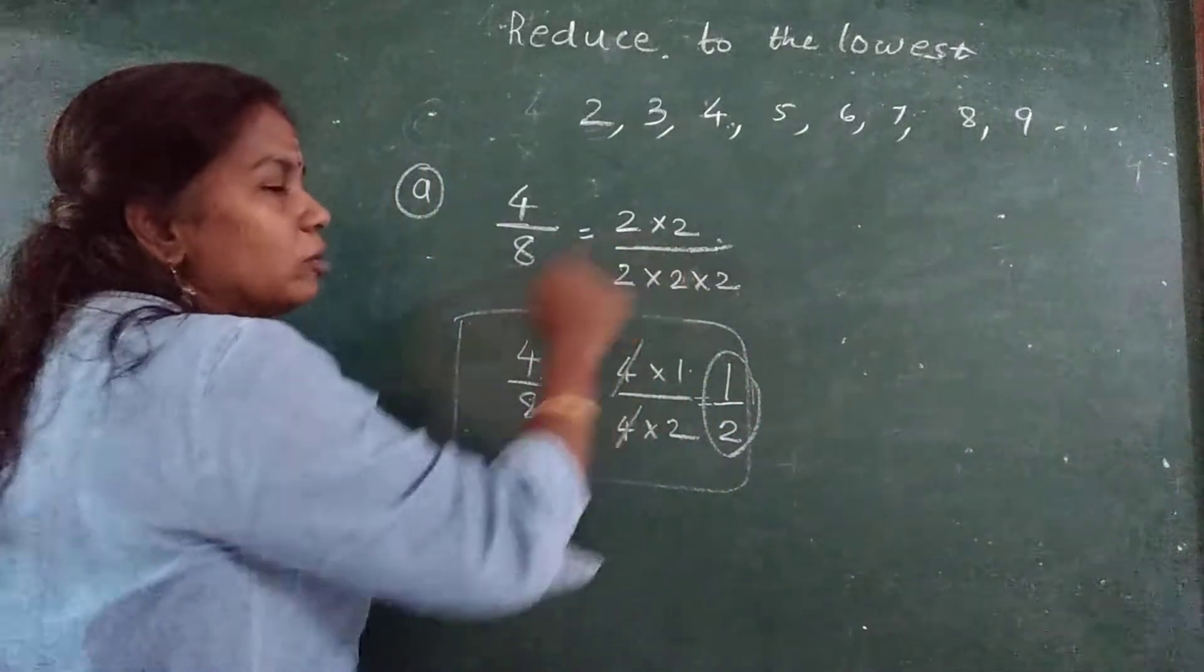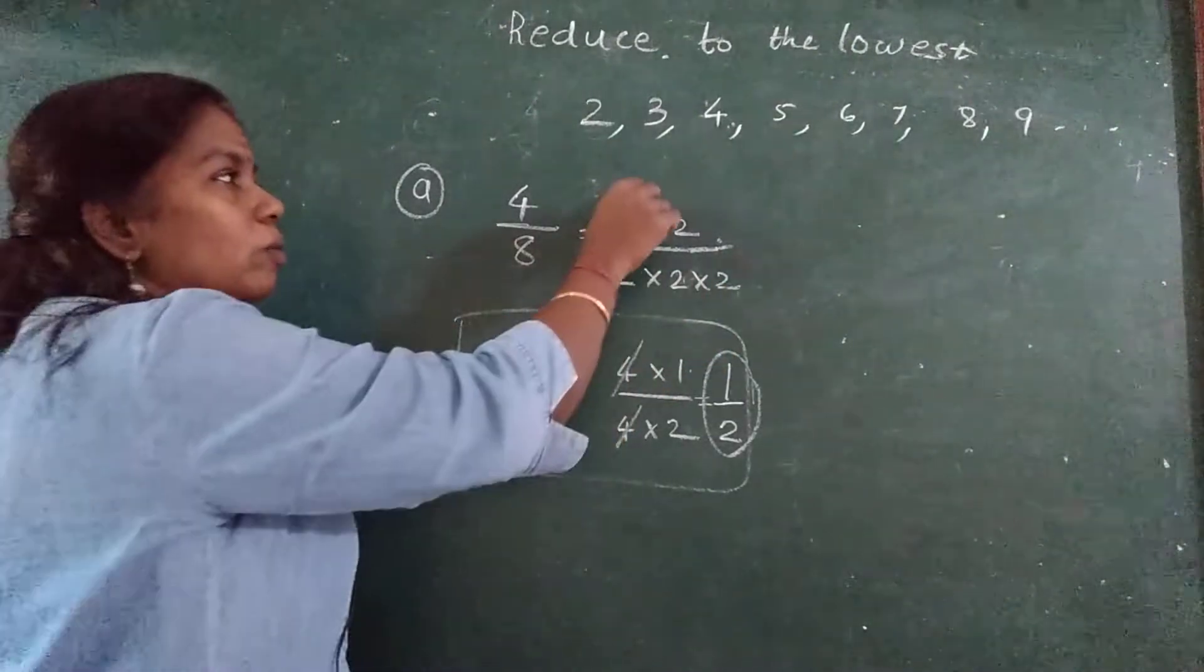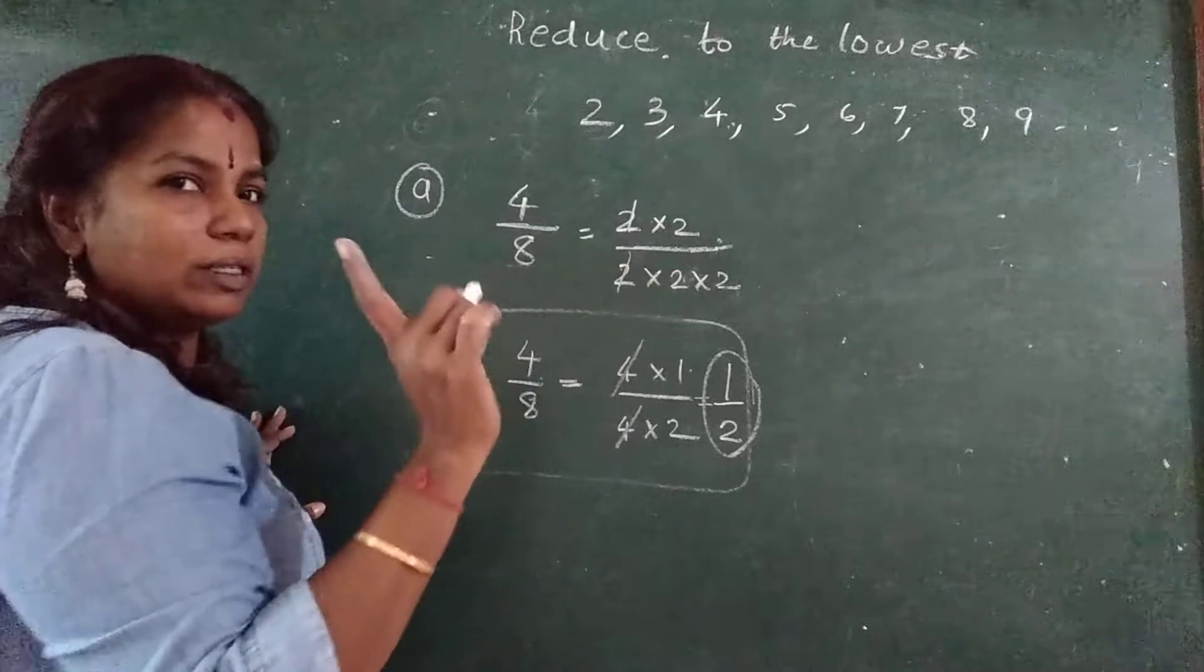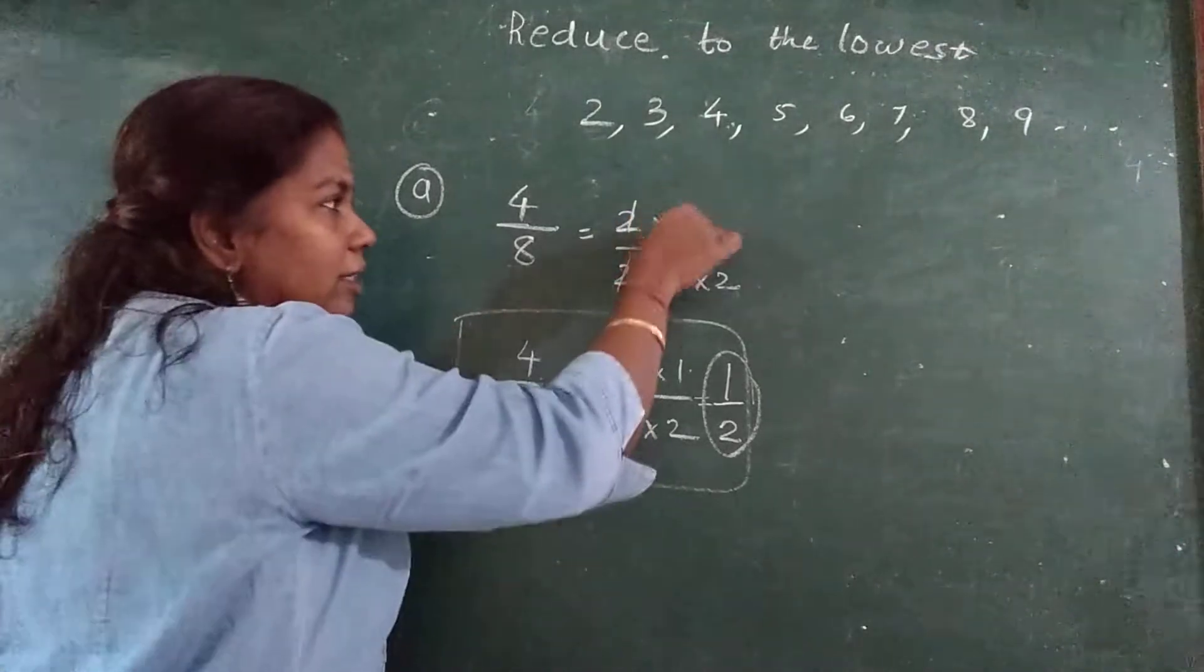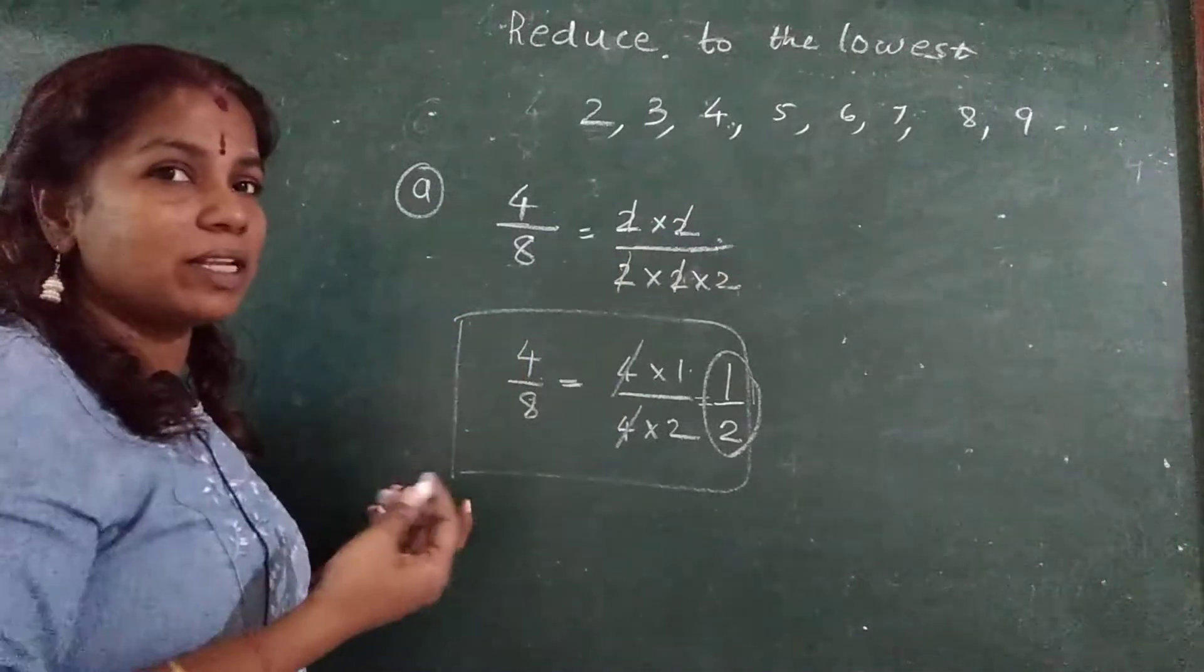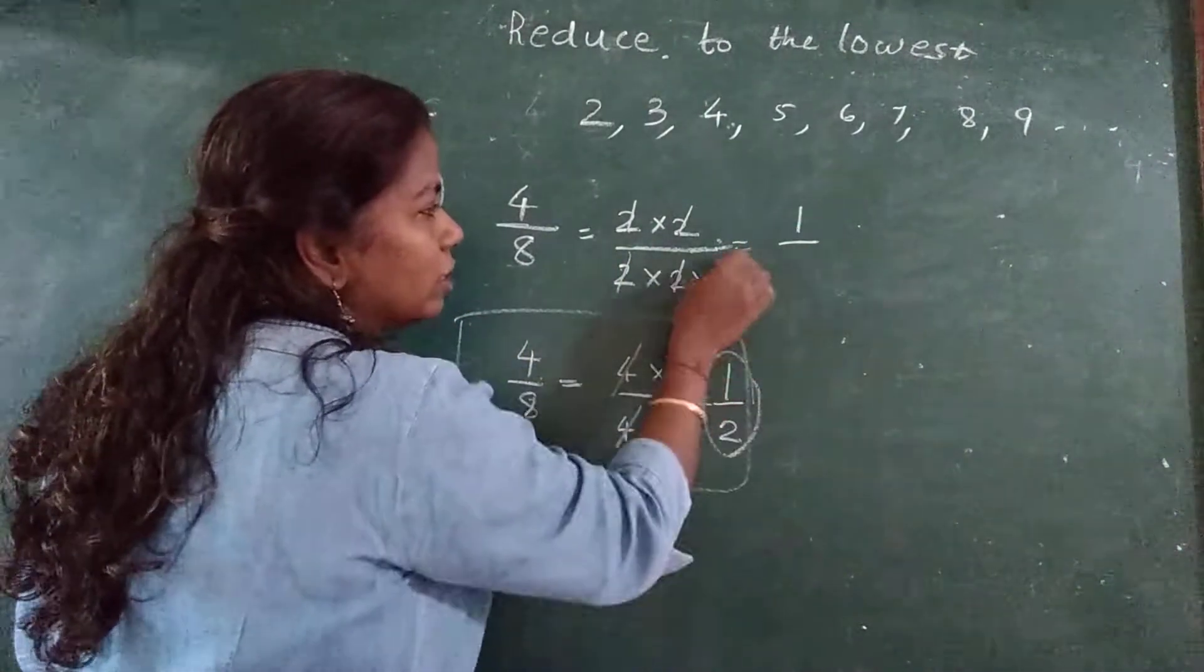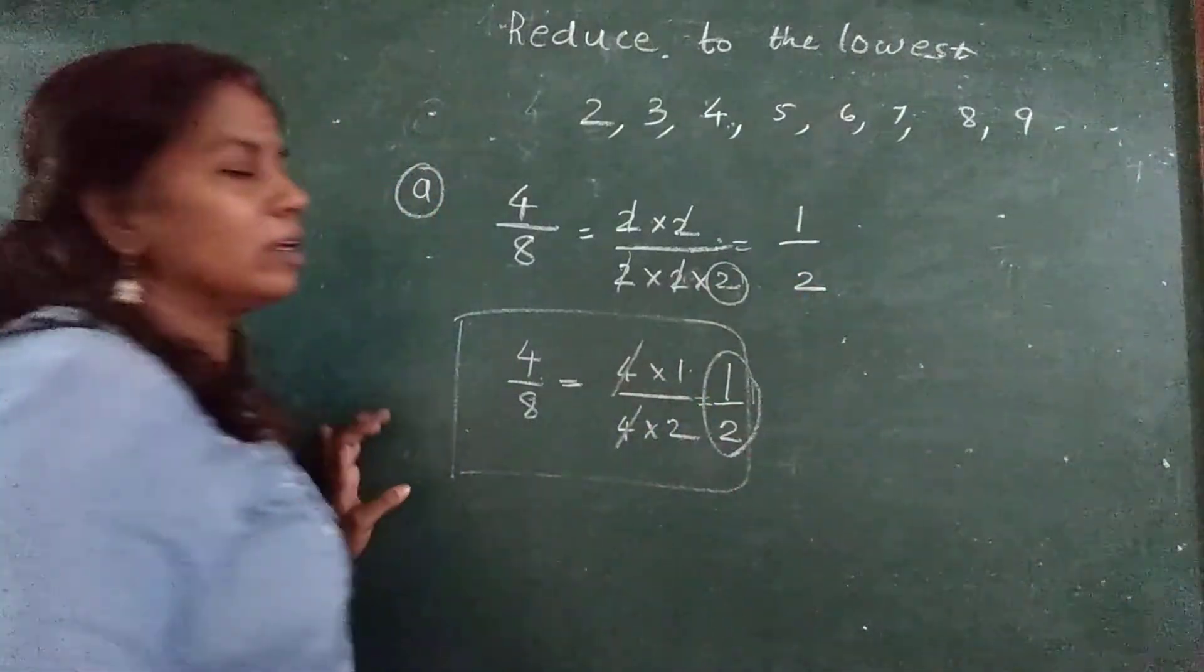Now this method: 4 is written as 2 into 2. 8 is written as 2 into 2 into 2. 1, 2. 2, 2 same same. Another 2, 2 same same. Here nothing is there. That means 1 is there. If nothing is there, 1 is there. What is remaining? 2.